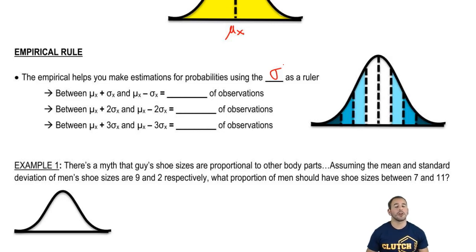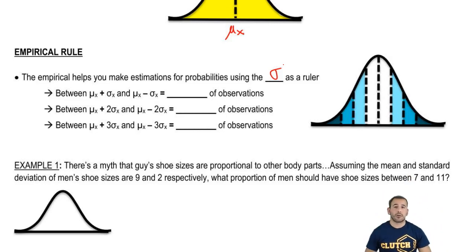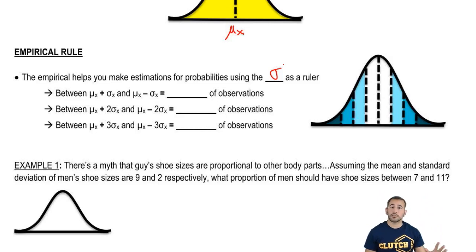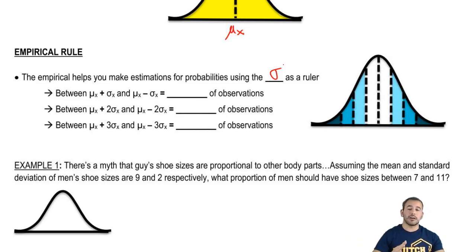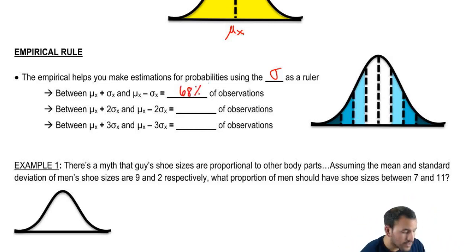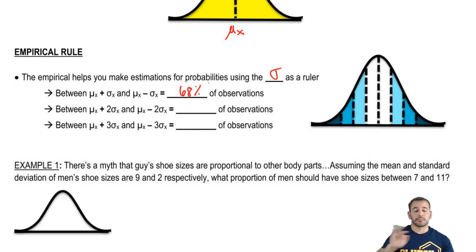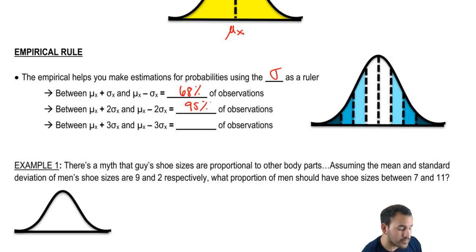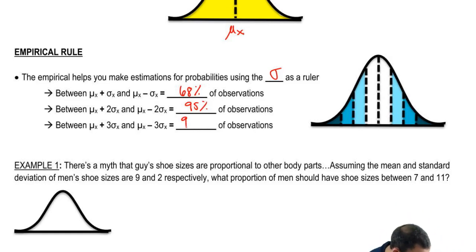With the empirical rule, we assume the distribution is normal — symmetric around the mean, bell-shaped, with total area equal to one. Between one standard deviation above and below the mean, we expect 68% of observations. Between two standard deviations above and below, we expect 95%. And between three standard deviations above and below, we expect 99.7%.